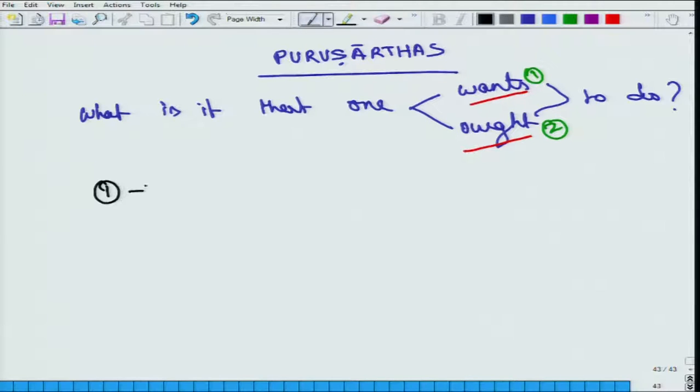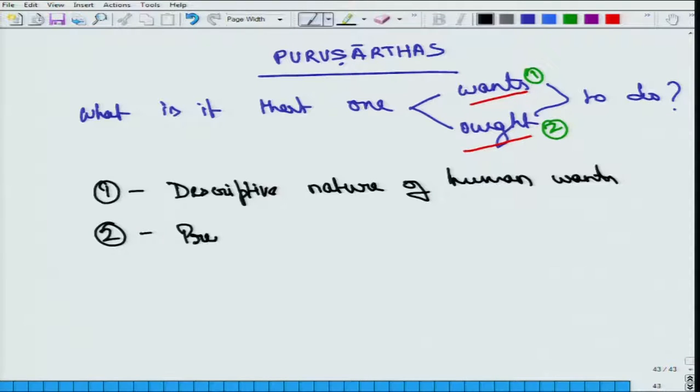We will say one talks about the descriptive nature of human wants, whereas two or ought talks about the prescriptive or injunctions for human action.